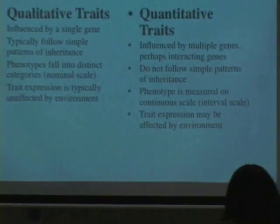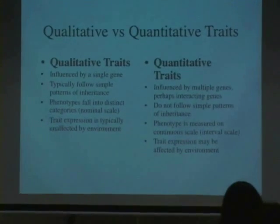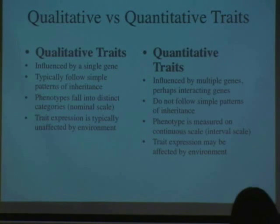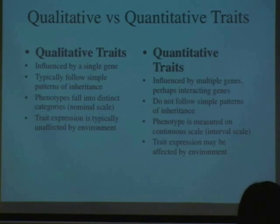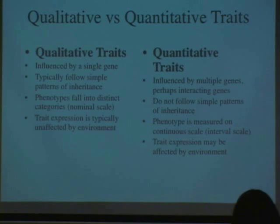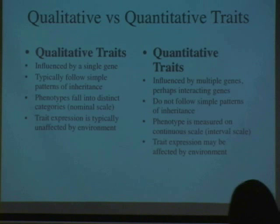We talked also about qualitative versus quantitative traits. Qualitative traits — did you guys have to do fly labs when you did genetics? You're so lucky otherwise — you had to get up at 4 o'clock in the morning, make sure they're all virgins and all this other stuff. But you did probably talk about all these traits in flies: red and white eyes, wrinkled versus straight wings and all this stuff. Those are qualitative traits. They're probably influenced by a single gene, tend to follow simple patterns of inheritance, phenotypes can be characterized on a nominal scale — they either have red or white eyes — and the trait expression is typically unaffected by the environment.